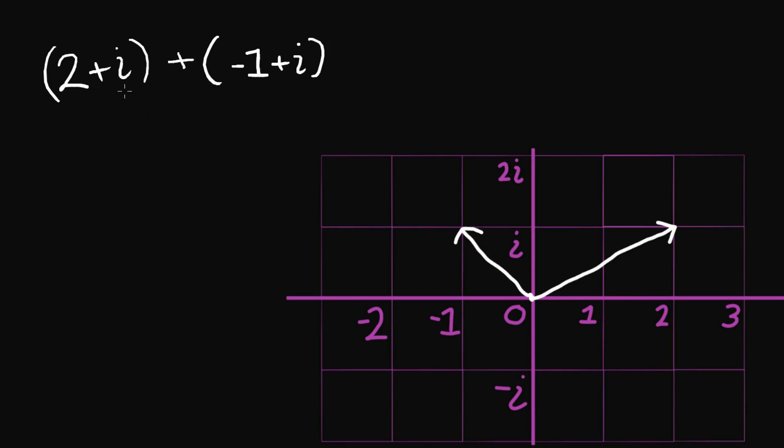Now for addition, what we're going to do, we're just going to walk along the grid. So we go over 2, up i, and then we know we're going to go negative 1, and then up another i. So we're eventually going to end up there.